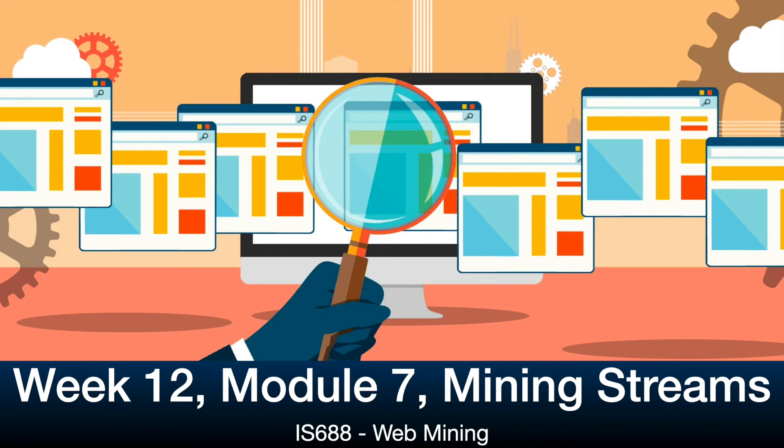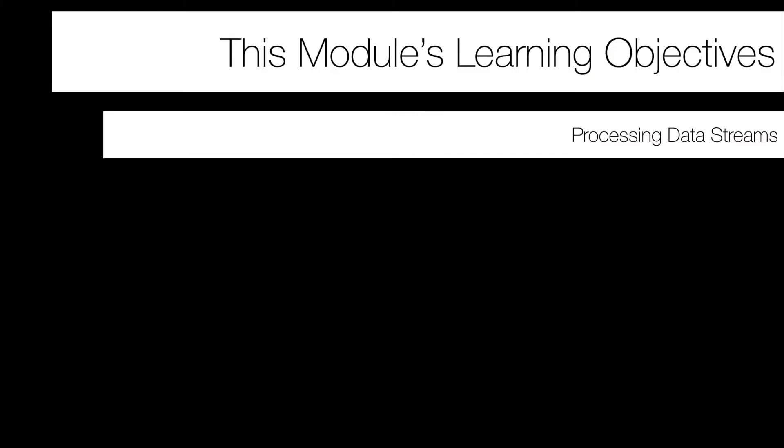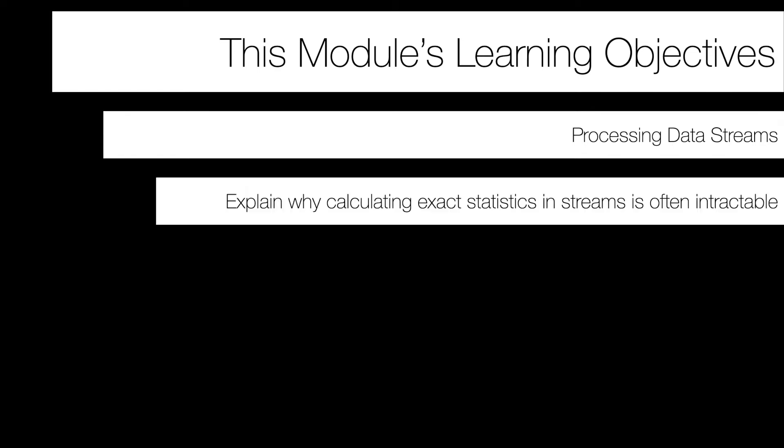Welcome to module 7 on mining data streams. There are four main learning objectives for this module. The first is to explain the difficulties that arise when you try to calculate exact statistics from a stream.